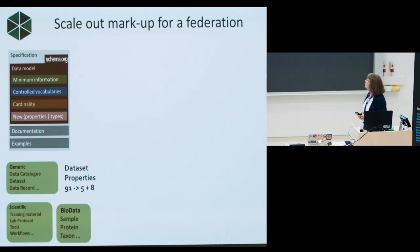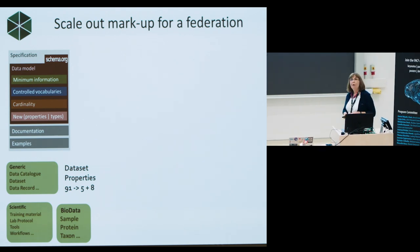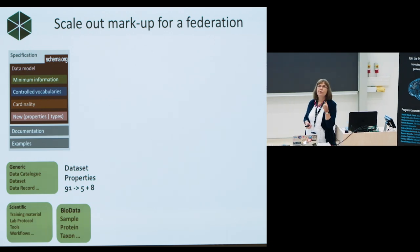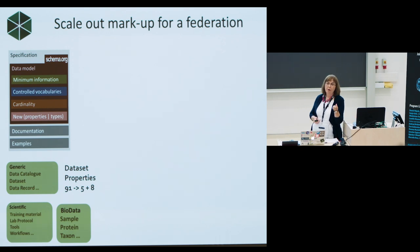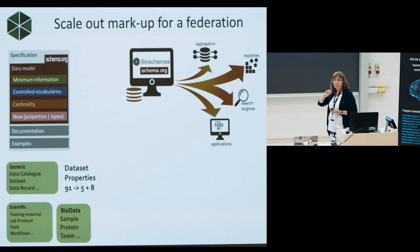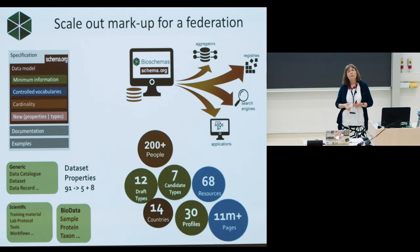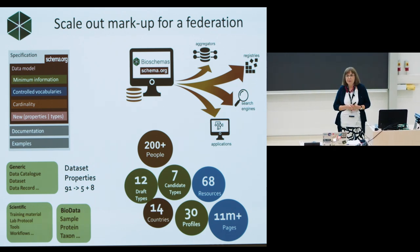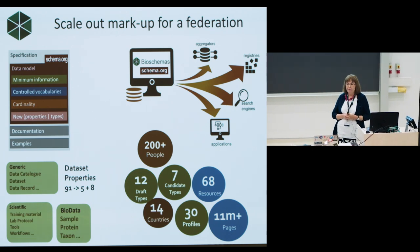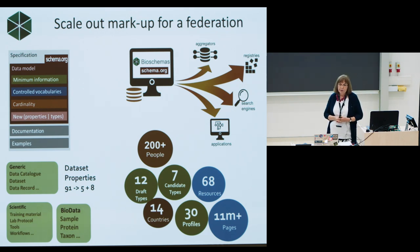Basic information like who owns it and when was it released — boring stuff like that, which tools could then use when automatically processing over it. We have generic specifications, some to do with scientific activities like marking up workflows and lab protocols, and things to do with biodata — the six or seven things you want to say if it's about a protein or a sample. We embed that into our resources, and then it can be picked up by aggregators, registries, search engines like Google, and various applications. So far 200 people have participated, 68 resources are marked up, we have about 11 million pages, seven candidate new types going to the schema.org community, 30 profiles, and 14 countries have participated.